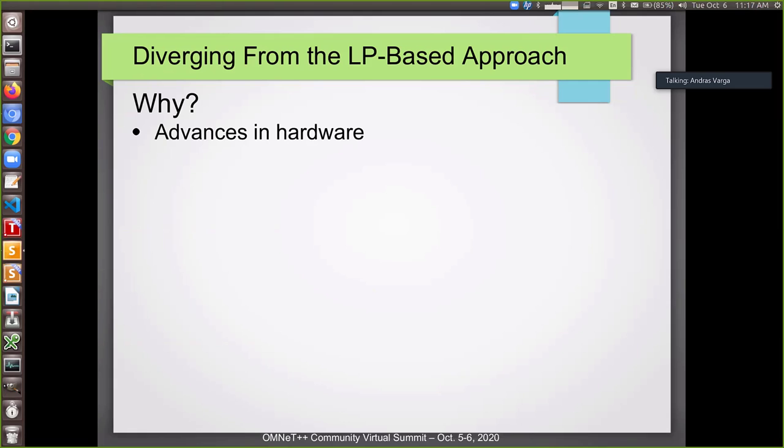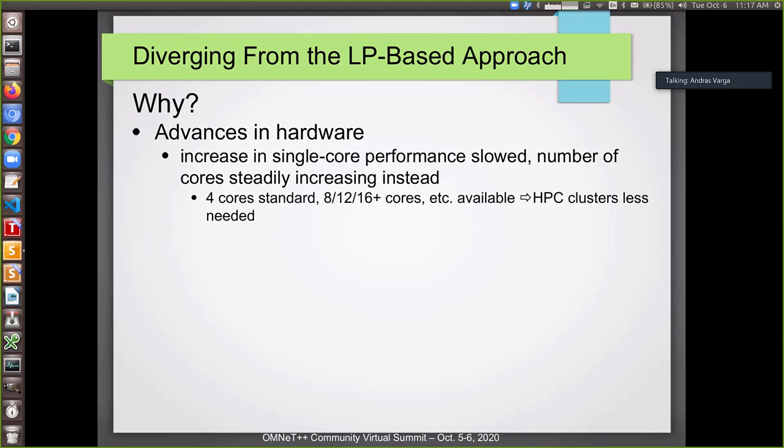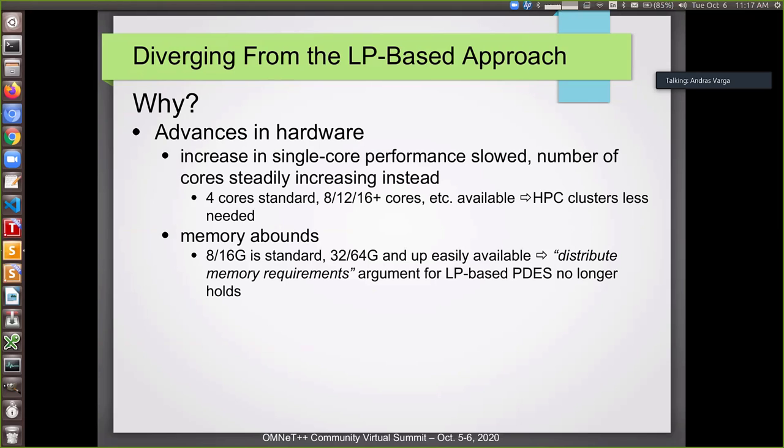So this was the original approach, original parallel simulation in OMNeT is based on the logical processes approach. And we want to diverge from this. Why? Because advances in hardware. So in the recent years, the single core performance is no longer increasing significantly. Instead, we have increasing number of processor cores, which means that nowadays you can buy a desktop computer, which has the equivalent or very similar functionality or power than a high performance computing cluster had before. So basically in these terms, everybody can have a supercomputer on his desk. And then the other thing is memory abounds. So we can easily have like 64 gigabytes of memory.